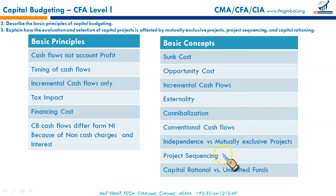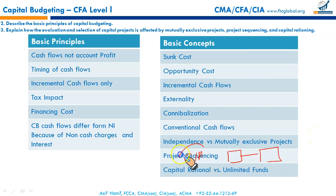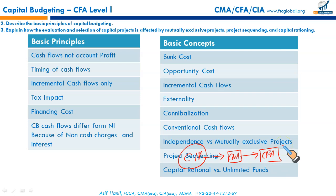Project sequencing means investing in certain projects that generate options to invest in new projects. For example, we started with CIA, succeeded, which gave confidence to start CMA. Success in CMA training has given the push to enter CFA in coming years. If you succeed in one project, it opens new opportunities for the next. Investing in one project generates more options to invest in future projects.